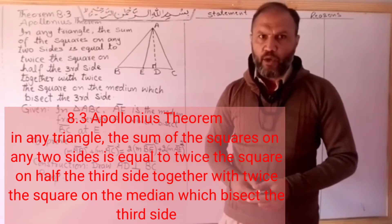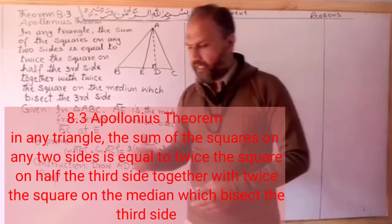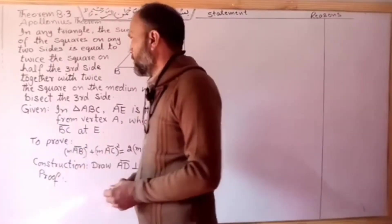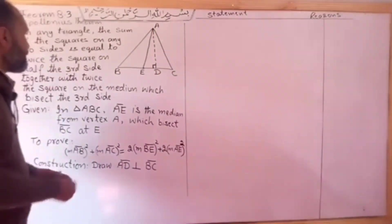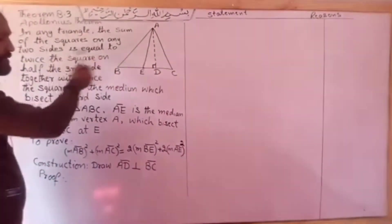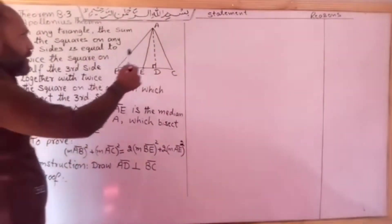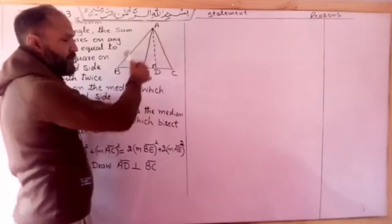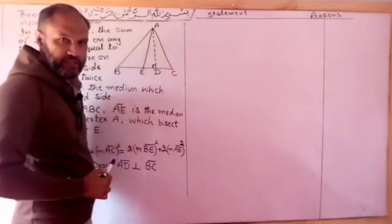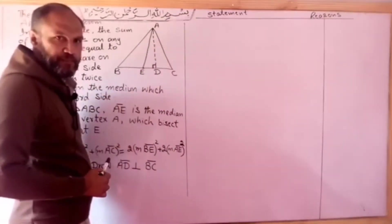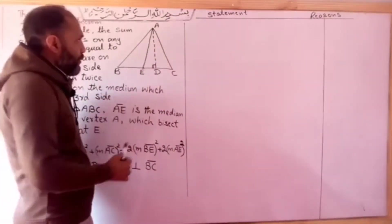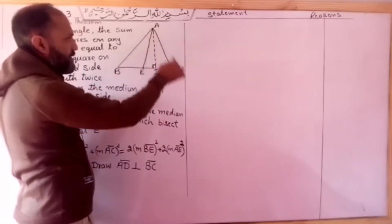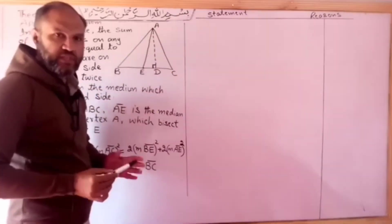Now I am going to tell you the statement. In triangle A, B, C — any two sides AB and AC are the two sides we are considering.